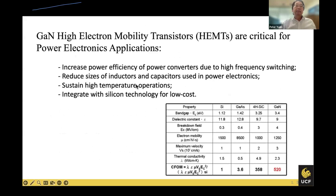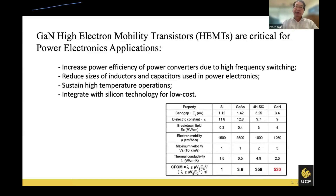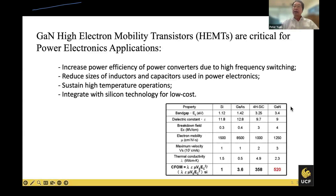Gallium nitride high electron mobility transistors, what are called HEMTs, are critical for power electronics applications. Power electronics are used in many different domains including batteries, electric cars, and energy systems. Looking at the materials comparison table, traditional semiconductor techniques use silicon, followed by gallium arsenide, then silicon carbide, and now gallium nitride. Emerging materials such as gallium oxide are the next frontier for major R&D applications.